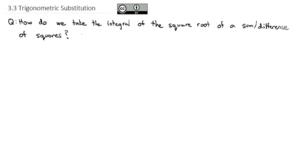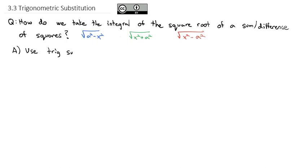In other words, how do we take integrals that have the square root of a perfect square minus x squared, or the square root of x squared plus a perfect square, or the square root of x squared minus a perfect square? How do we take integrals involving those expressions? Those are very difficult to take generally with our current strategies.